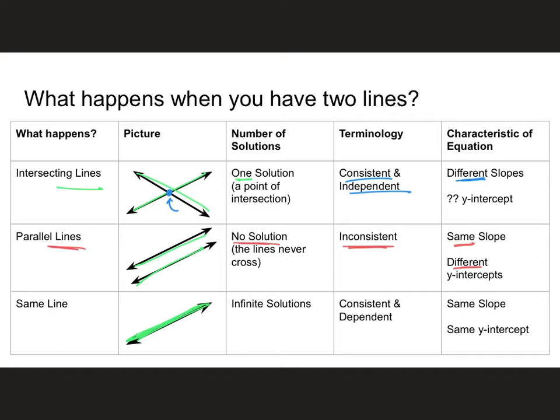then we're down here into this third situation. They are actually the same line. The same line just intersects itself always. So it's like two lines on top of each other. There are an infinite number of solutions because every single point where these two lines cross is a solution to this system of equations. We say that they are consistent and dependent. They have the same slope and the same y-intercept.